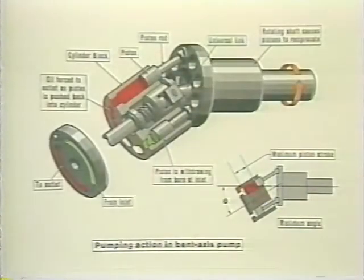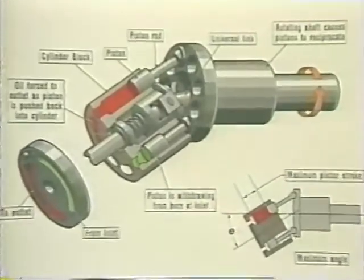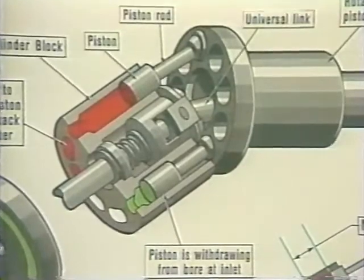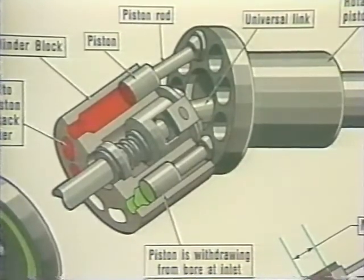In axial pumps, the pistons are parallel to each other and to the cylinder block axis. They may be either bent axis or inline units. The cylinder block in a bent axis pump rotates at an angle to the drive shaft. The pistons are fastened to the drive shaft flange by ball joints and are forced in and out of their bores as the distance between the cylinder block and drive shaft flange changes. Pumps of this type may be fixed or variable displacement; the latter, with proper controls, will even reverse the direction of flow if the yoke is moved across center.